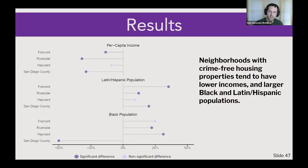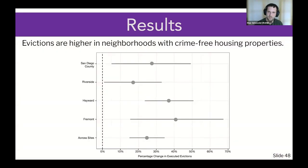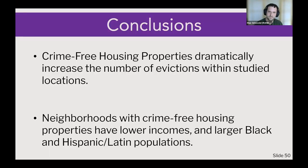Results: When we looked at the descriptive analysis for sites, we found that block groups with crime-free housing policies had much lower per capita income, higher Latino and Hispanic populations, and higher Black populations. Our estimator showed a really consistent effect — a much larger change in evictions within sites of around 25%. We found a dramatic increase in the number of evictions in block groups that have crime-free housing sites.